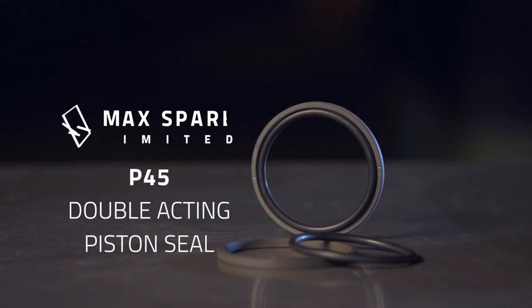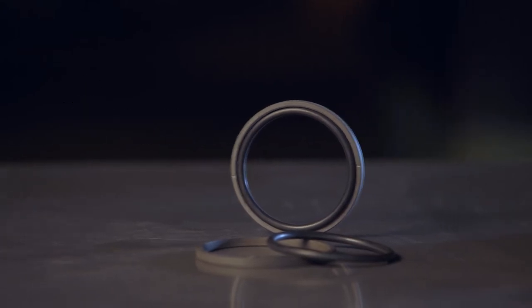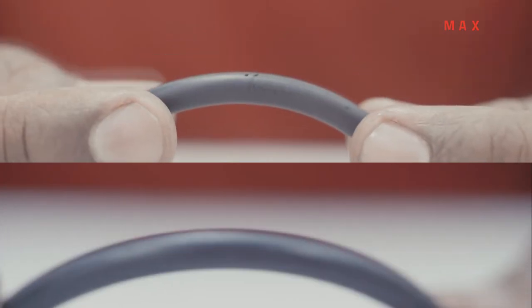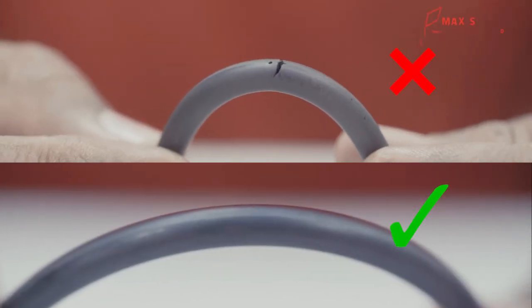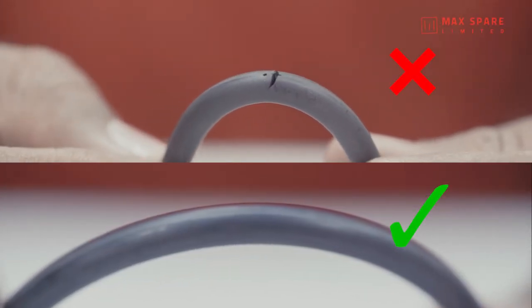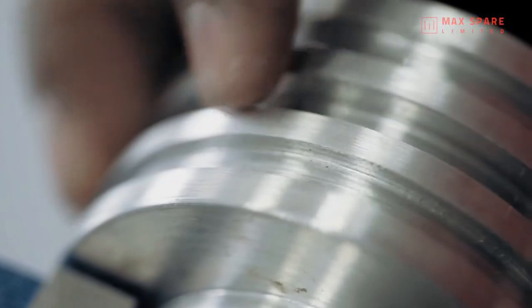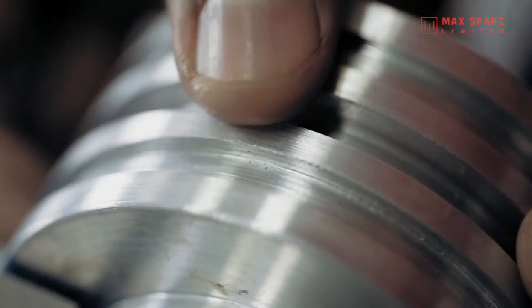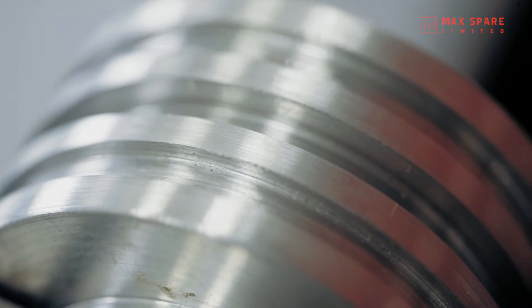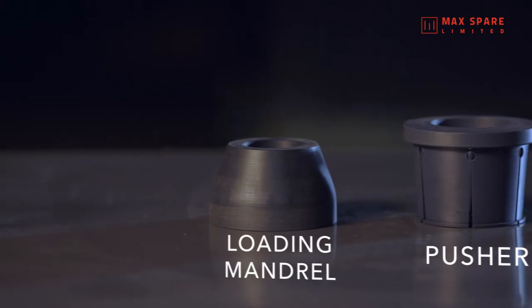Installation of Max Spare P45 Double Acting Piston Seal. Check the o-ring energizer and sealing ring for any cracks or defects before installation. Make sure that the surface of the piston head is clean and it has no sharp edges as it can damage the o-ring and seal while assembly.